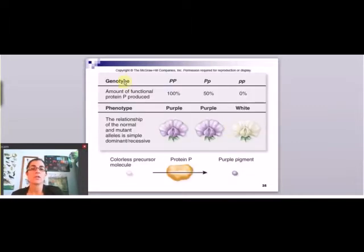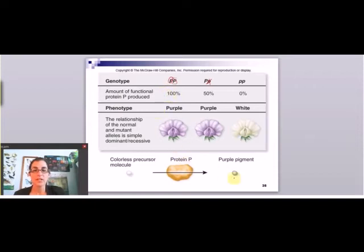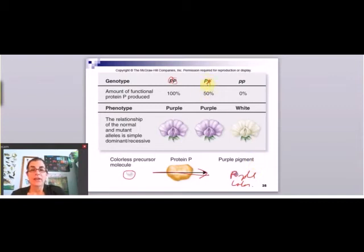In simple dominance, making less of the protein isn't going to matter because a single copy of the dominant allele is still going to be enough normal protein. The homozygous dominant has two copies of the big P allele and the heterozygote has one copy. The recessive allele is non-functional, so both the homozygous dominant and heterozygote produce enough protein P to make purple pigment. In the heterozygote, you only get 50% of protein P, but these two are identical — they make the exact same color.